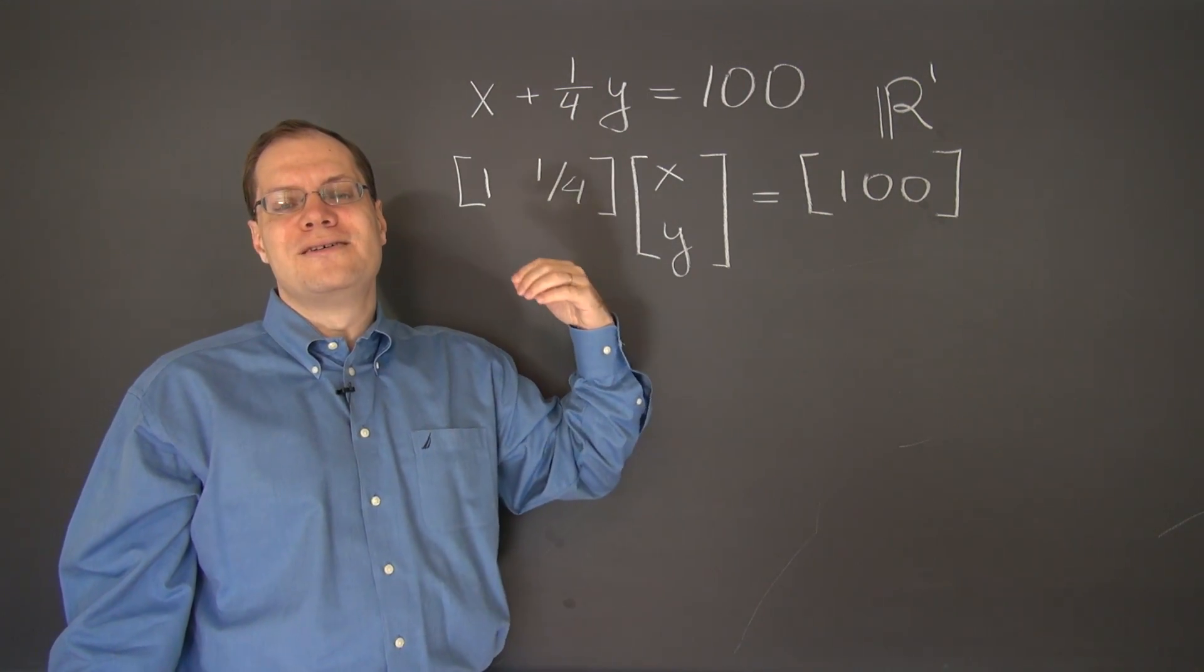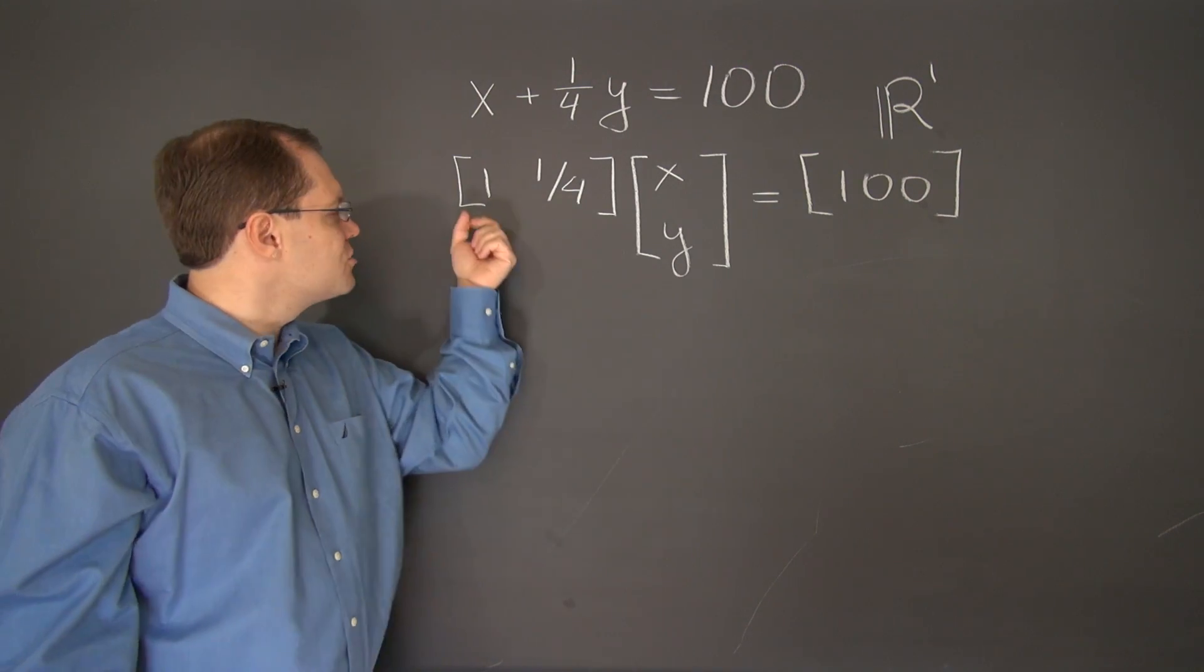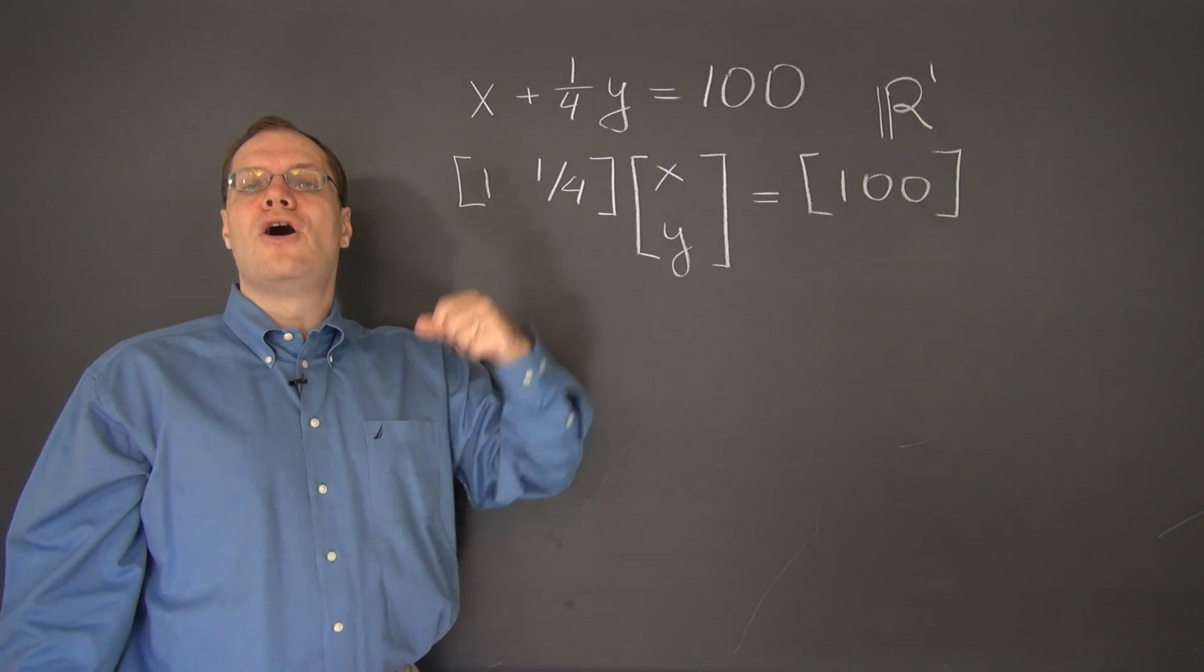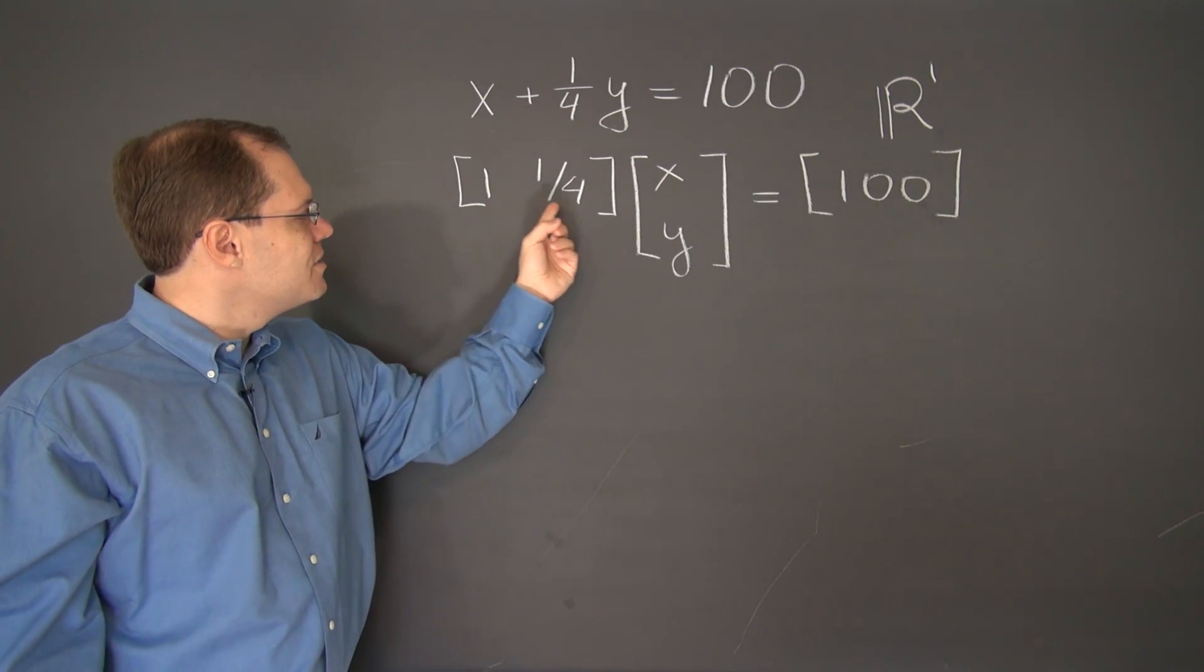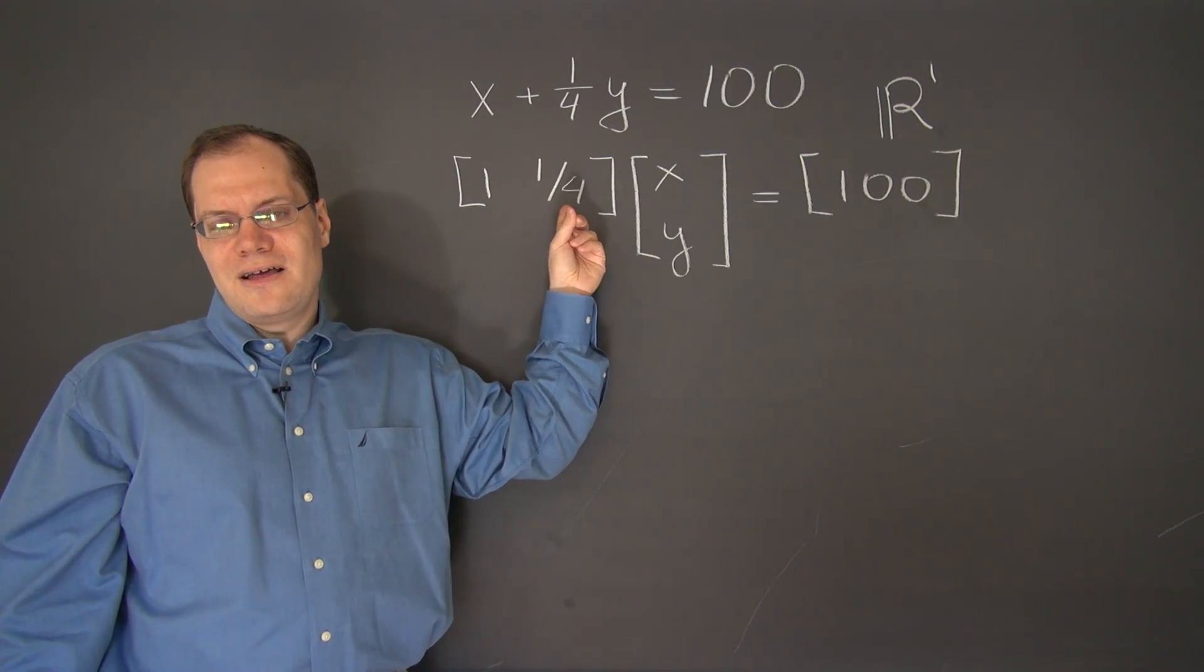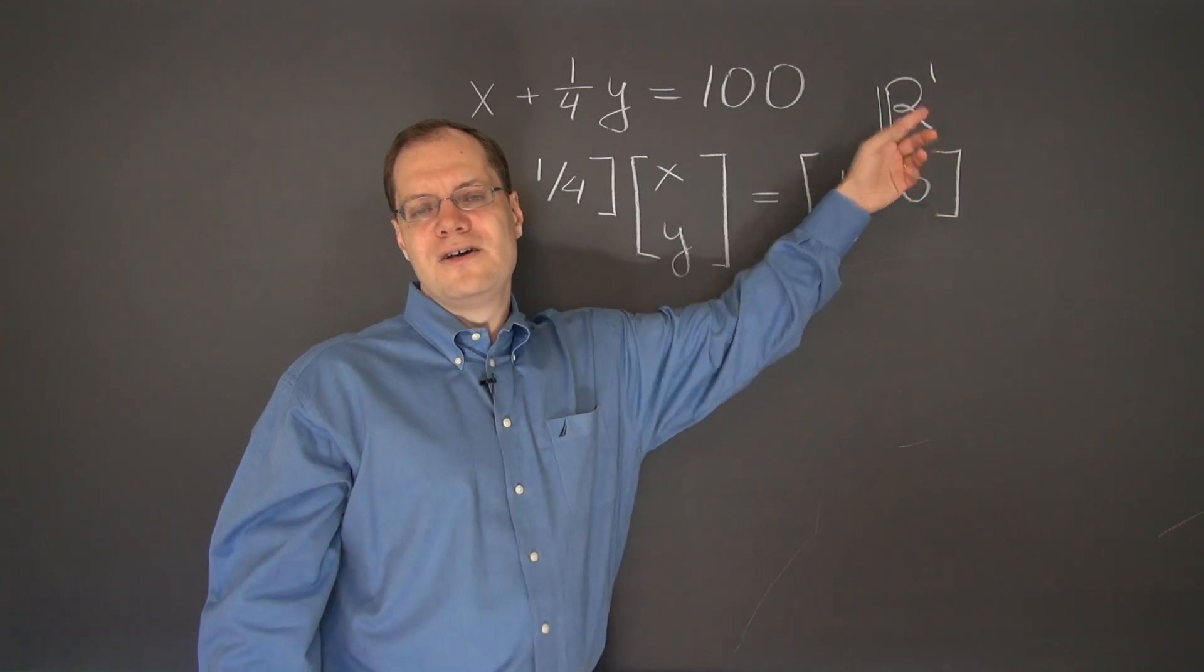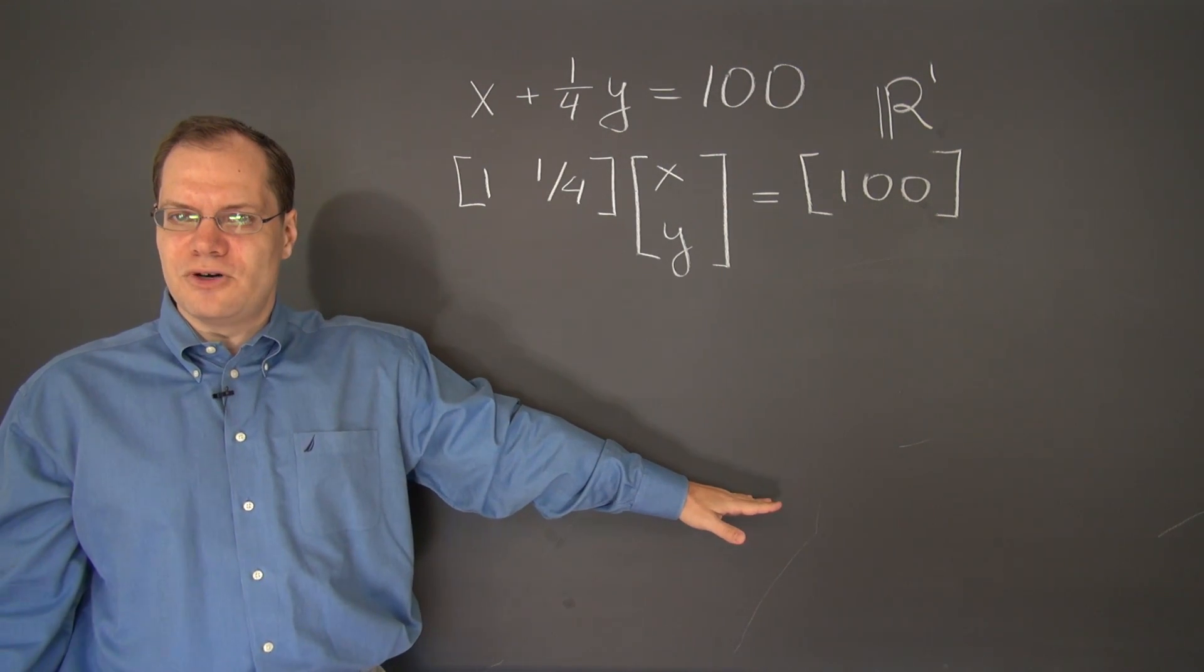You see, maybe this problem is so simple that it's actually a little bit harder to really recognize these numbers as columns. But they are. And as columns, are they linearly dependent? Of course they are, because this column is four times this column. One is a multiple of the other. And of course we knew they would be for more general considerations, because we have two vectors in a one dimensional space. So of course they're linearly dependent. We'll write down the null space in just a moment.